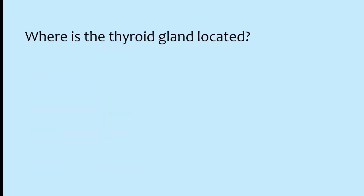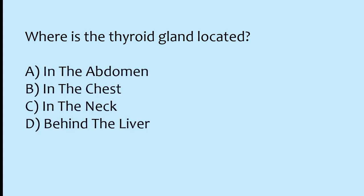Where is the thyroid gland located? Options: in the abdomen, in the chest, in the neck, behind the liver. The correct answer is option C: the thyroid gland is located in the neck.